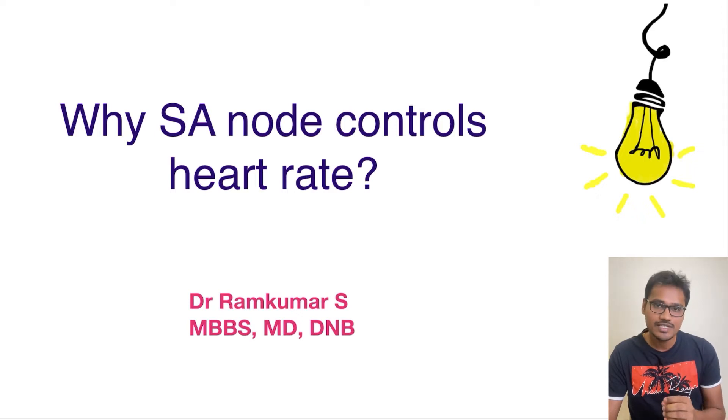It is often referred to as the primary pacemaker. Even though the AV node as well as the Purkinje fibers can generate their own rhythm, still the SA node is the one determining the heart rate. So let's try to understand the reason behind it.